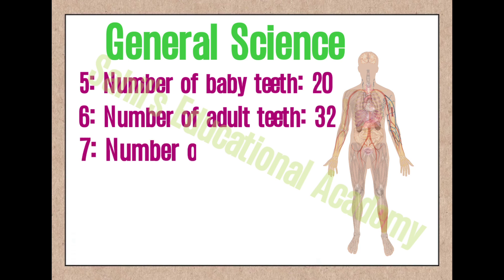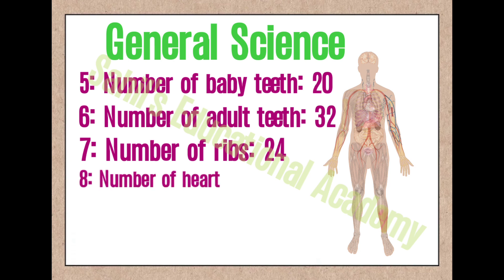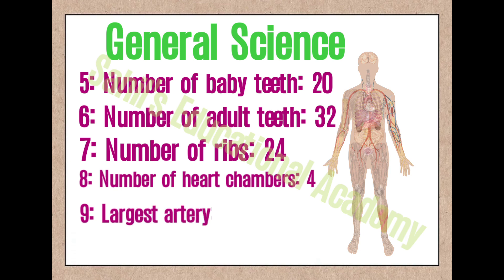7. Number of ribs: 24. 8. Number of heart chambers: 4. 9. Largest artery: aorta.